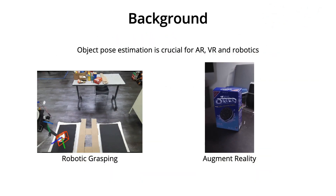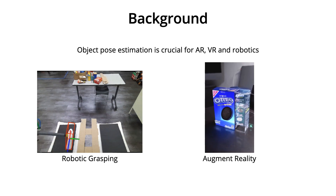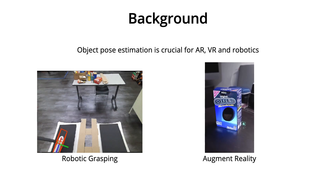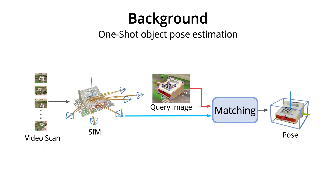Object pose estimation is crucial for immersive human-object interactions in augmented reality, which demands the pose estimation of arbitrary household objects in our daily lives. Different from instance-level or category-level methods, the previous work OnePose proposes a new setting named One-Shot Object Pose Estimation. It assumes that only a video sequence with annotated object poses is available for each object and aims for its pose estimation in arbitrary environments. This setting eliminates the requirements for CAD models and separated training for each object, making it more widely applicable for augmented reality applications.